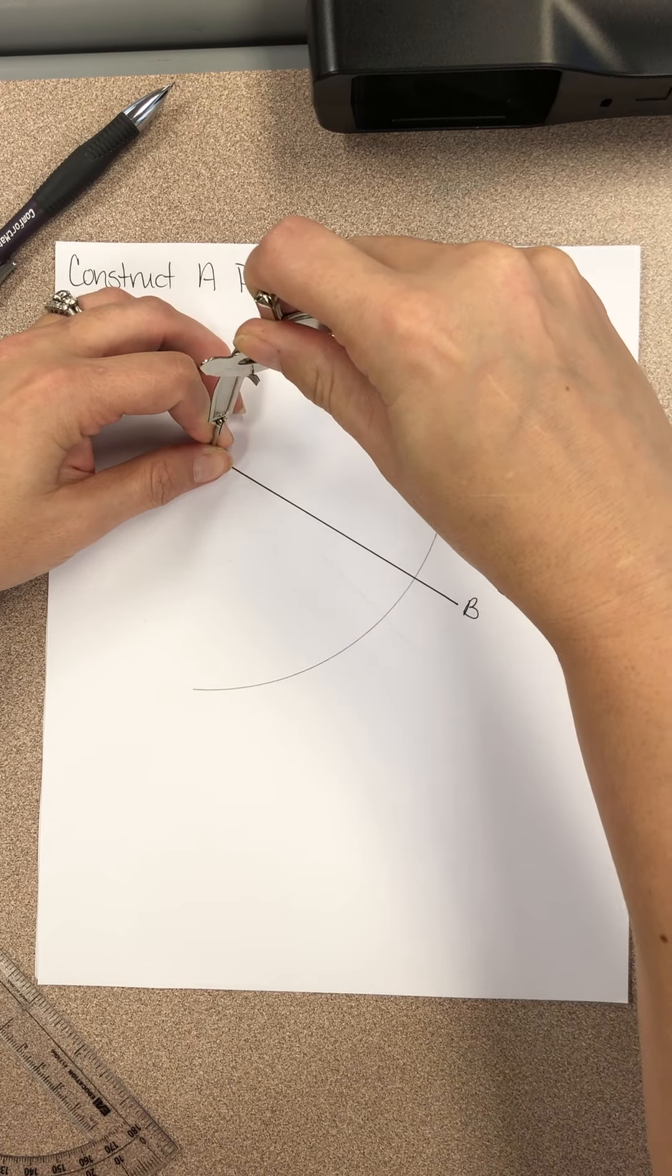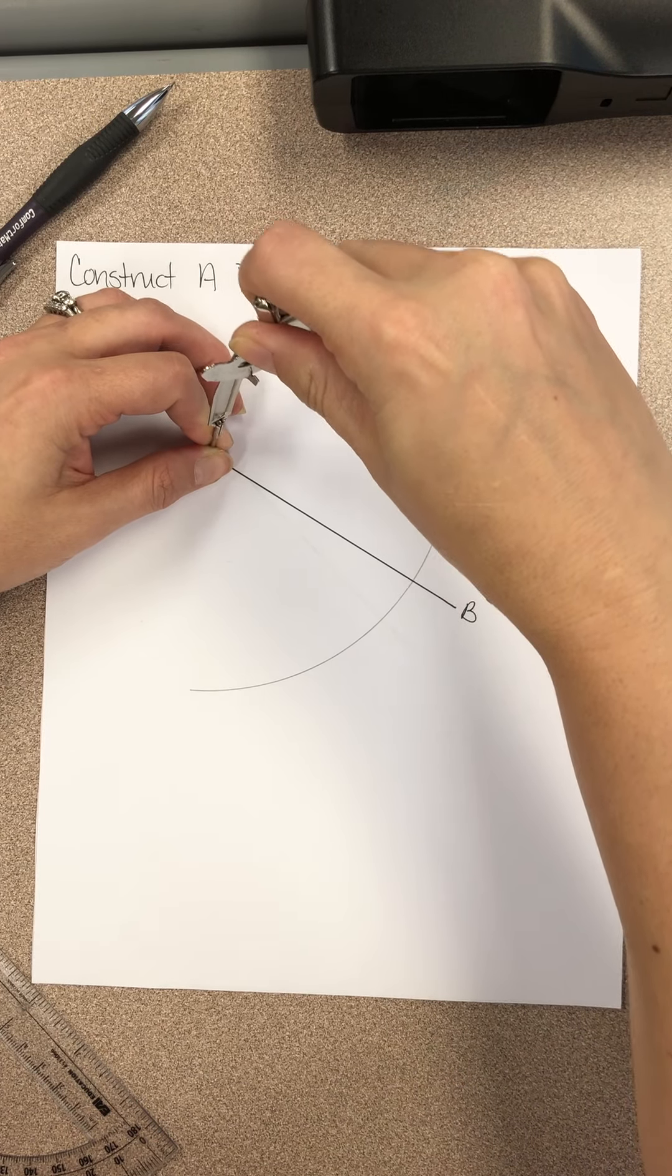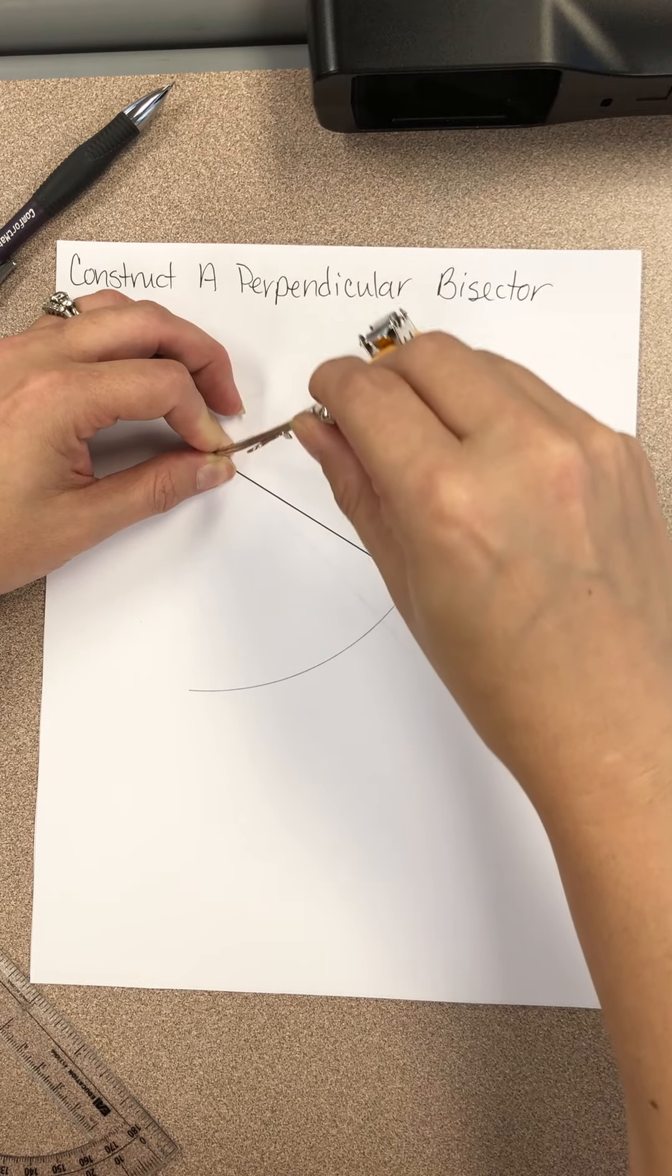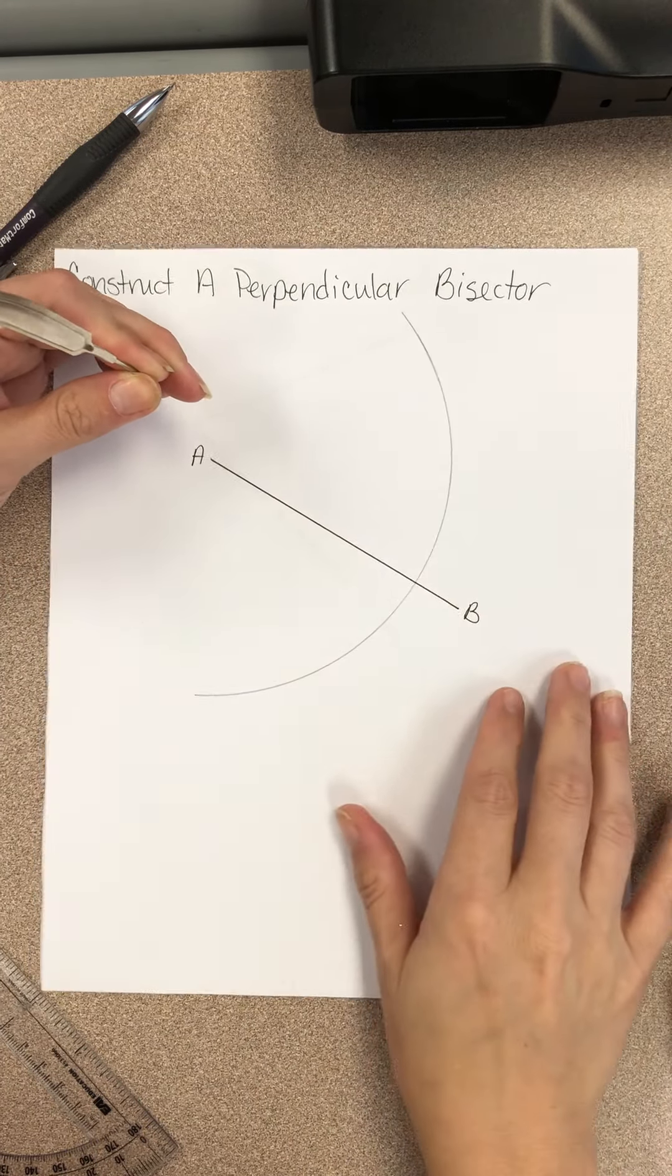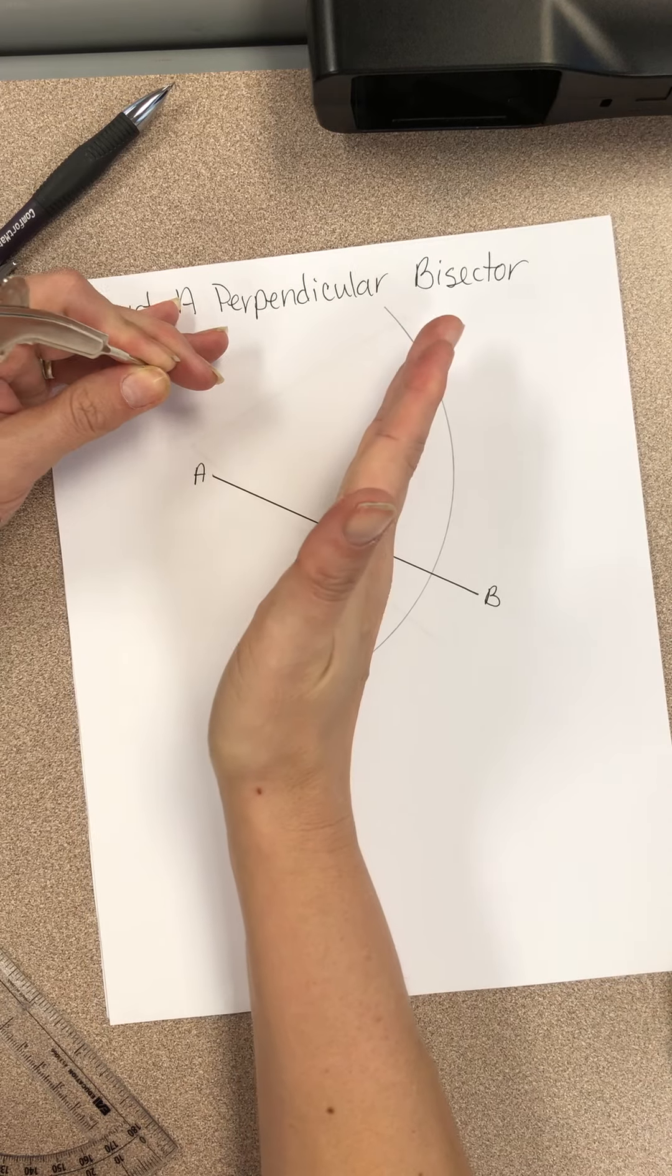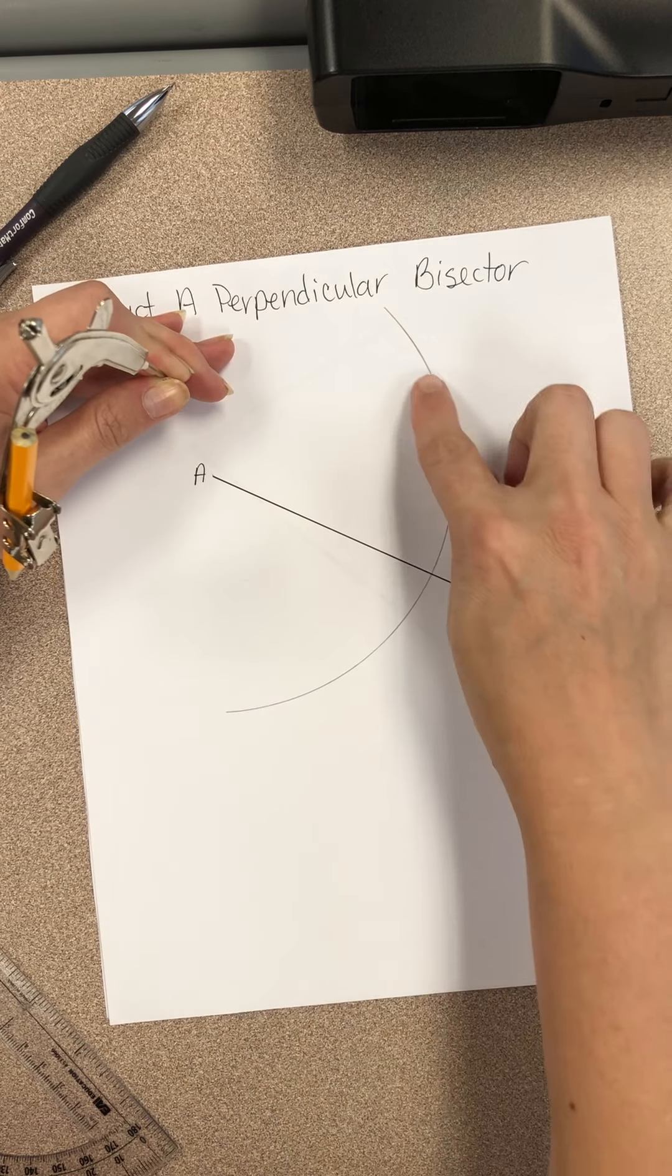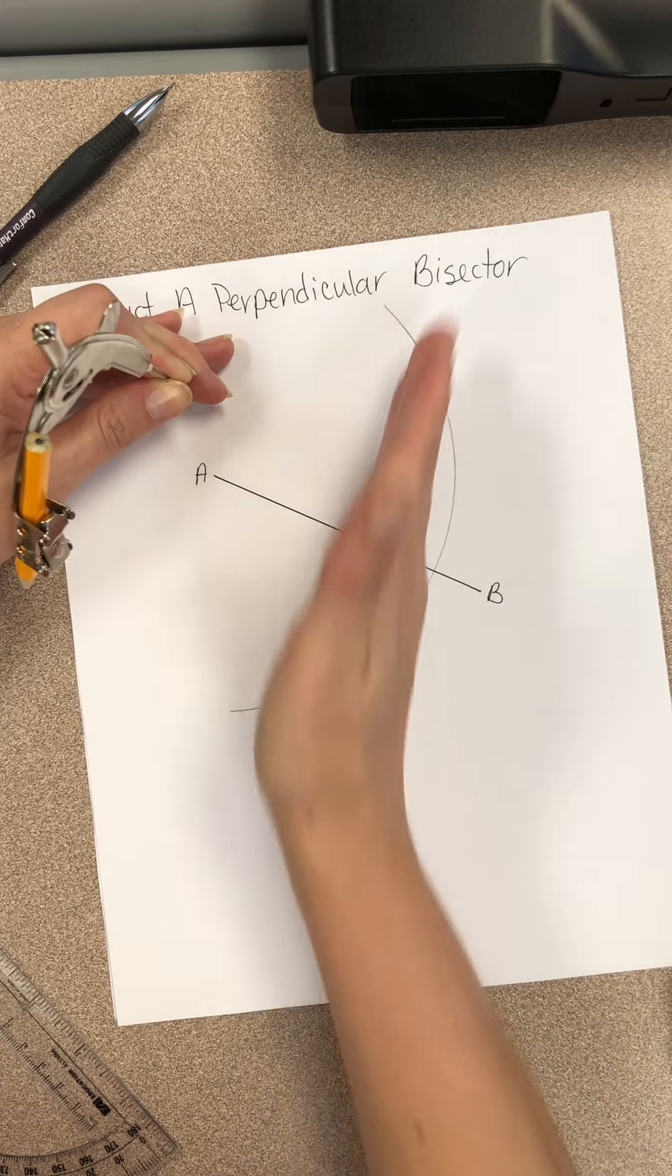You could actually just do a little one above and a little one below. You could do it either way. In other words, you could just do a little one here and a little one down here. It doesn't have to be this whole thing. But what you want is about in the middle. You can kind of guess where it is. You want the arc to go past about that middle line.